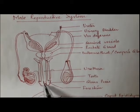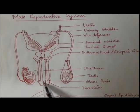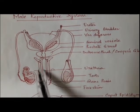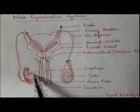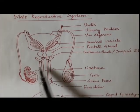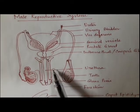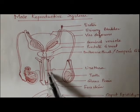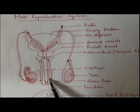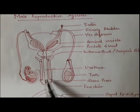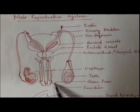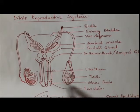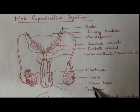Urethra opens at the penile region, or the penis. Next, we will talk about the structure which helps in copulation — that is the penis or penile region. This is the erectile copulatory organ and it has a long shaft region with an expanded tip. This expanded tip is termed as glans penis.